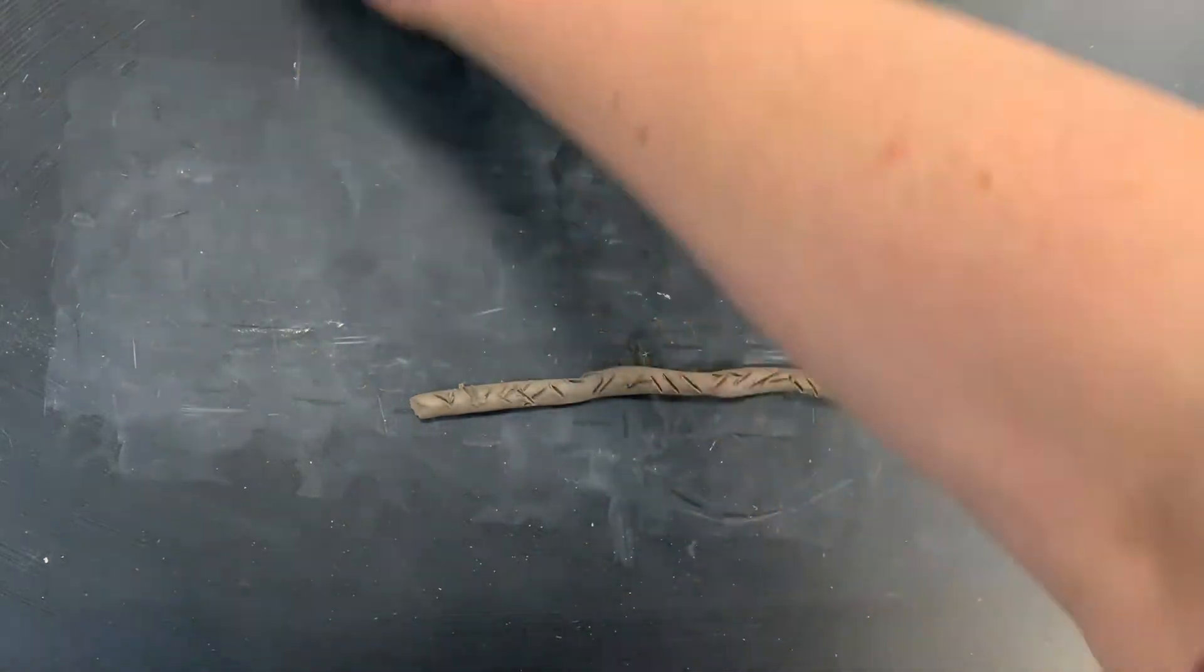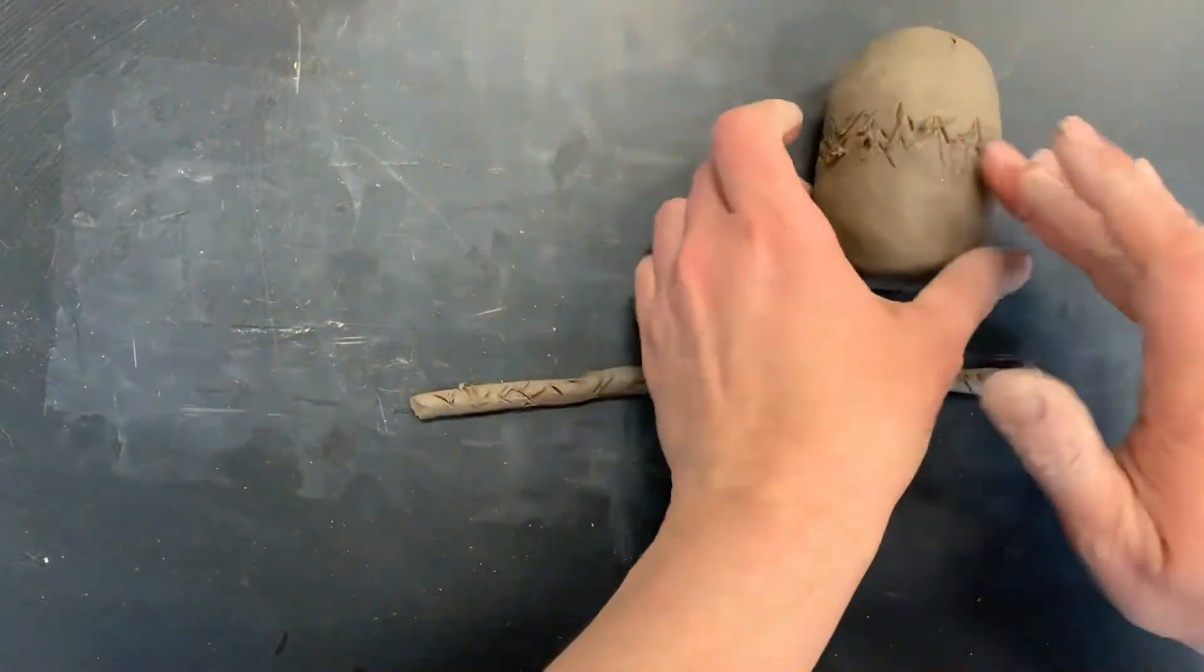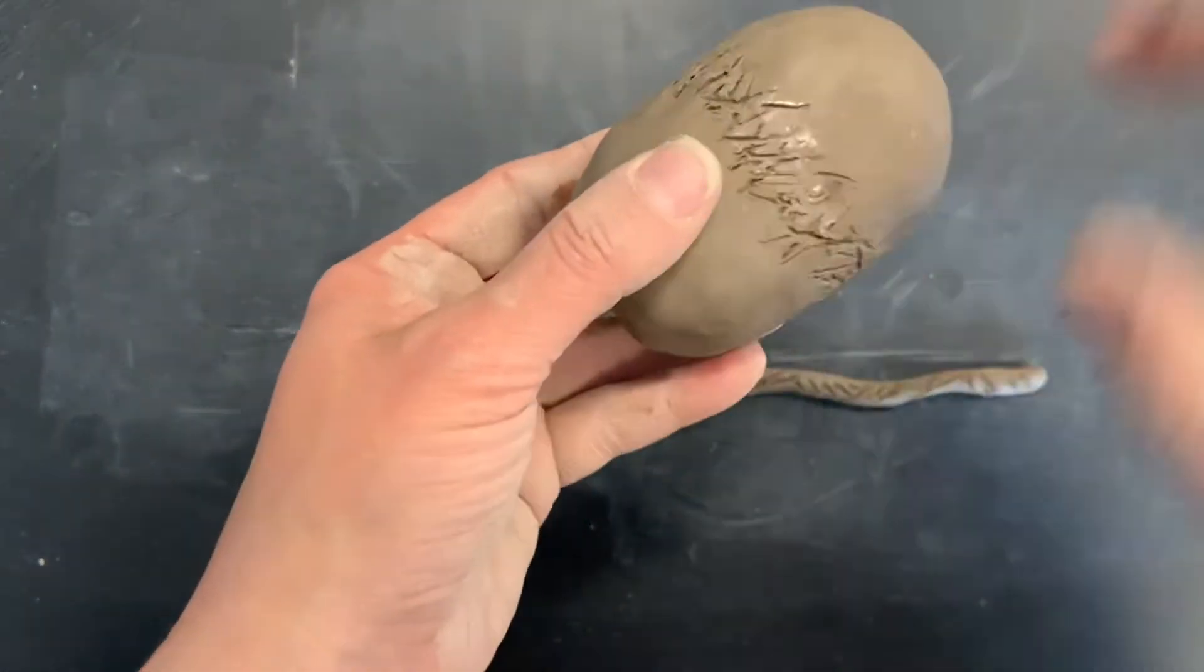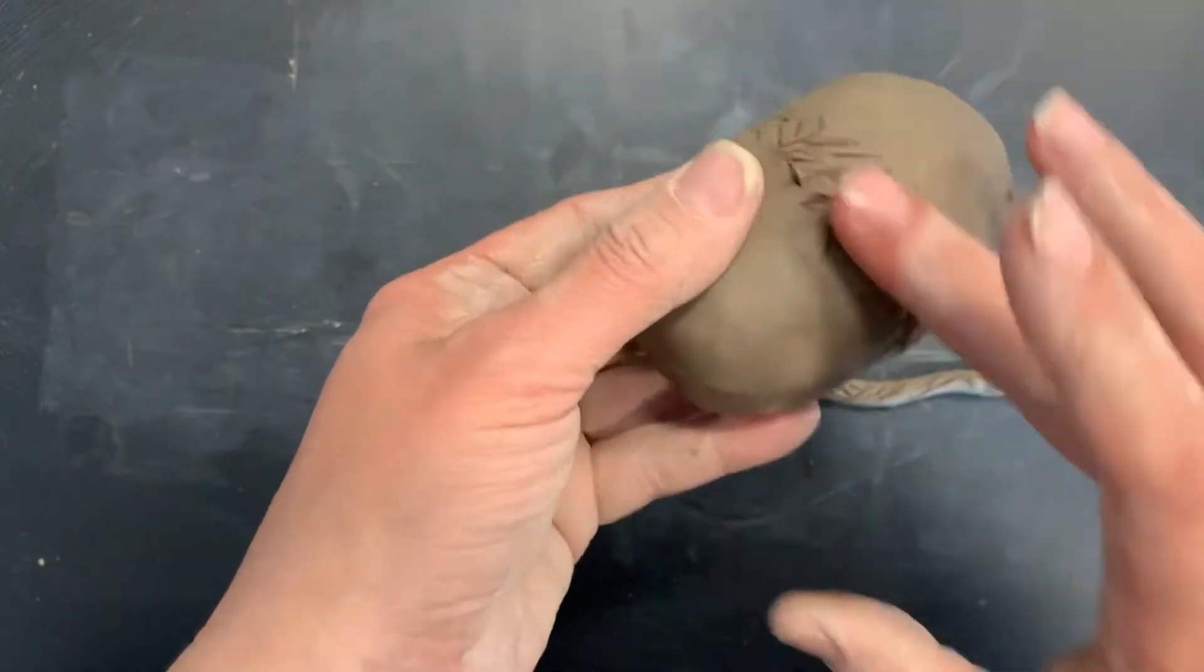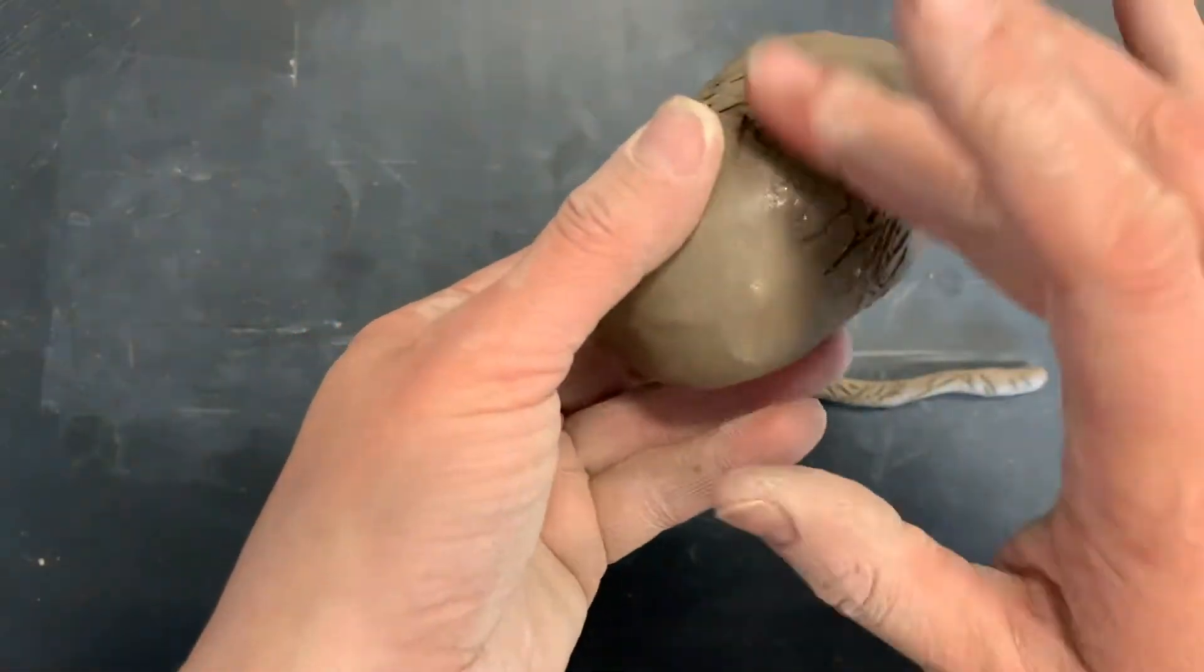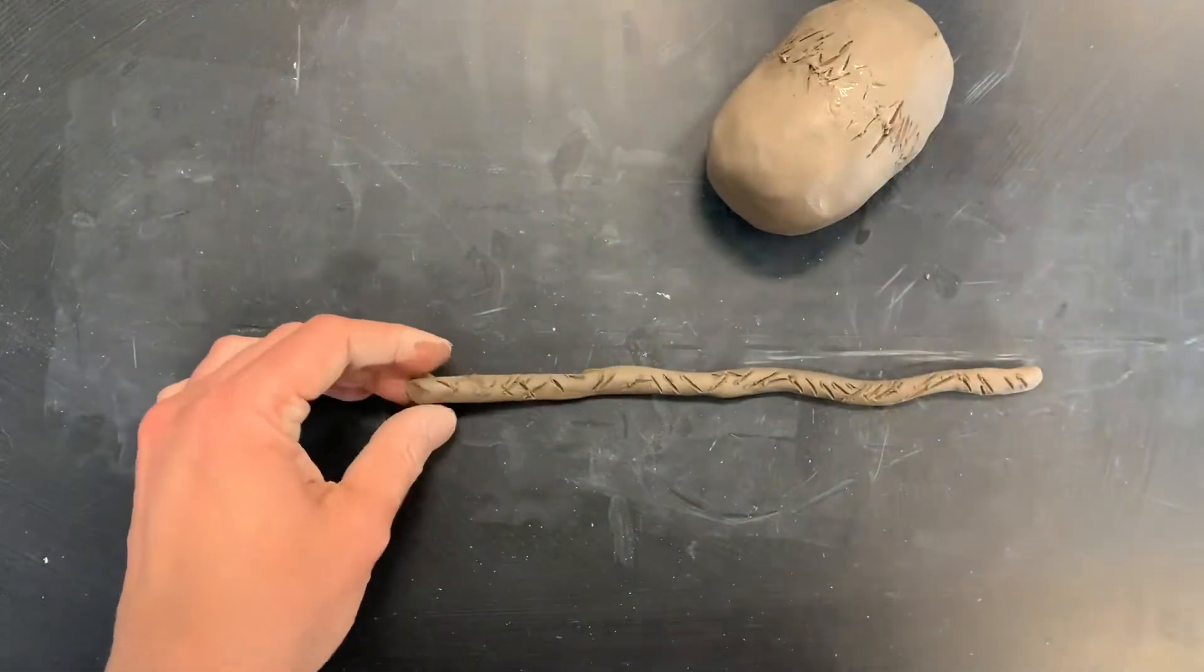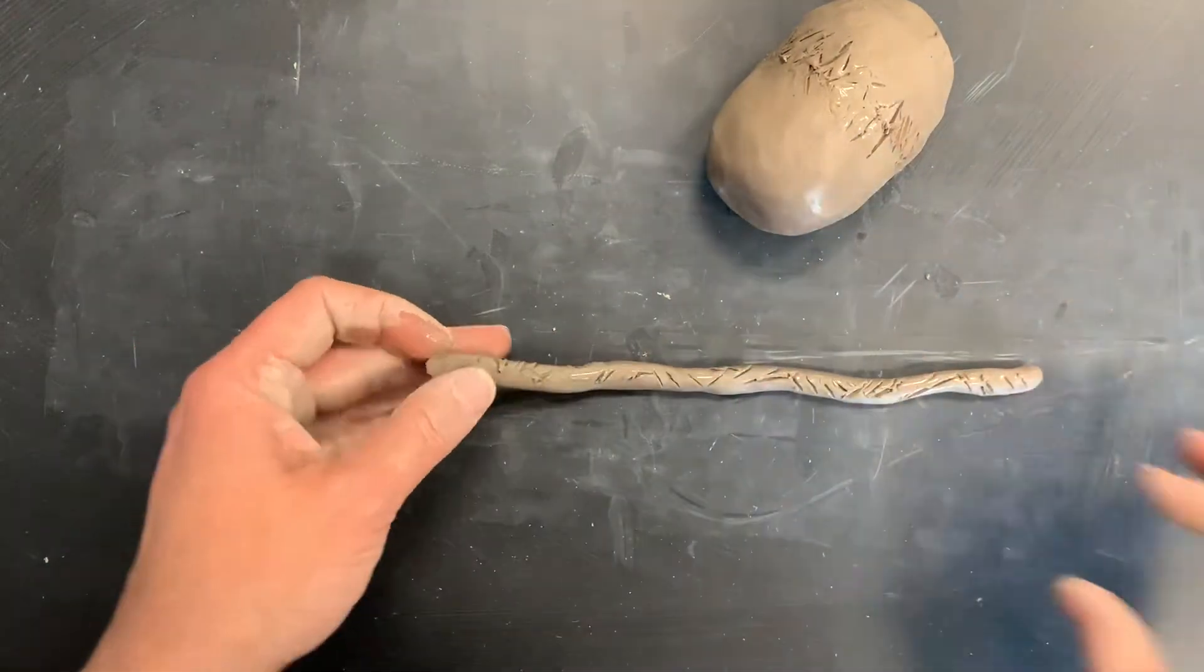The next of the triplets is to add your slip. Score and then slip. Put a little bit of that water-clay mixture where your score marks are. Don't overdo it, it just needs a little bit of moisture. And then same with the coil, a little bit of the water.